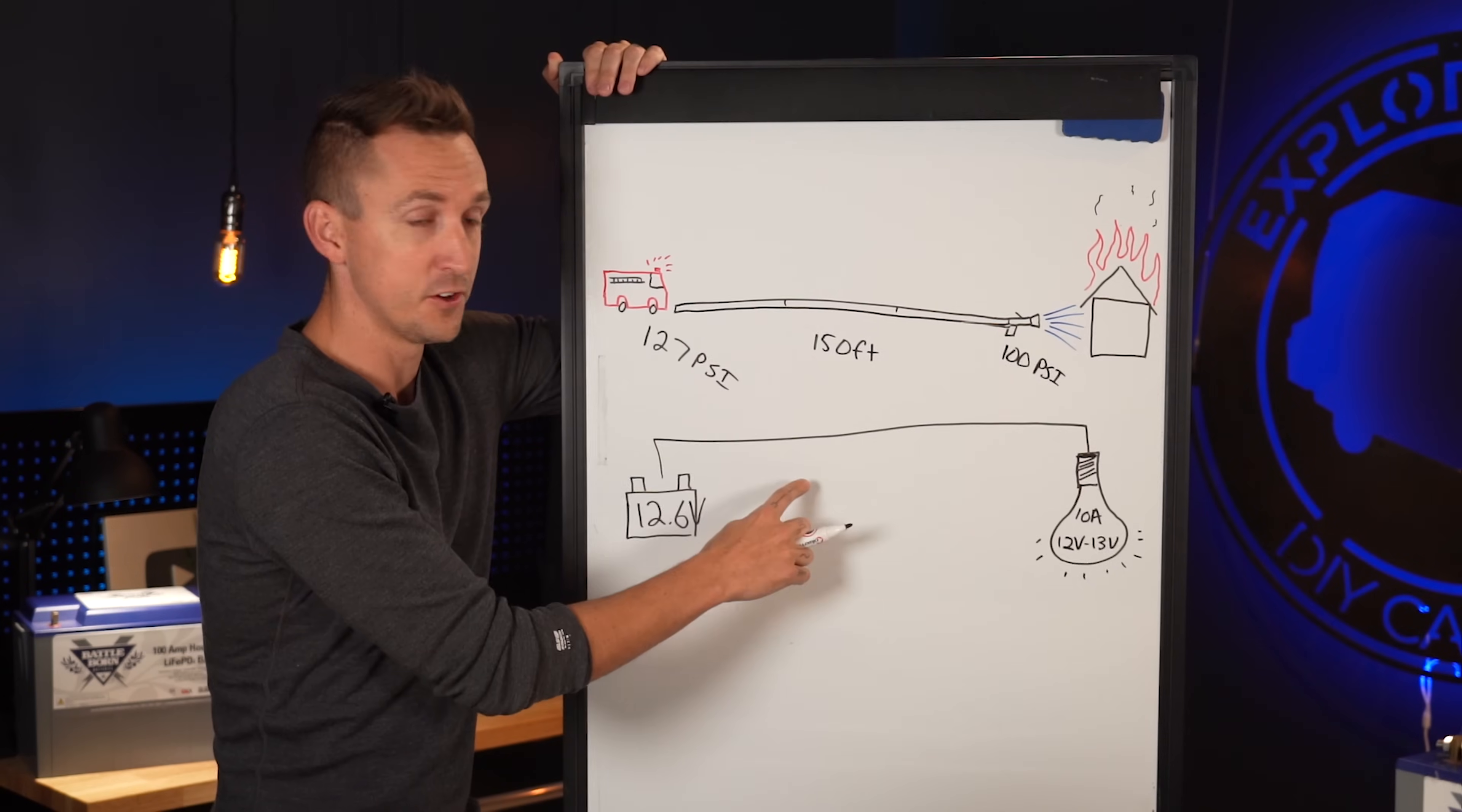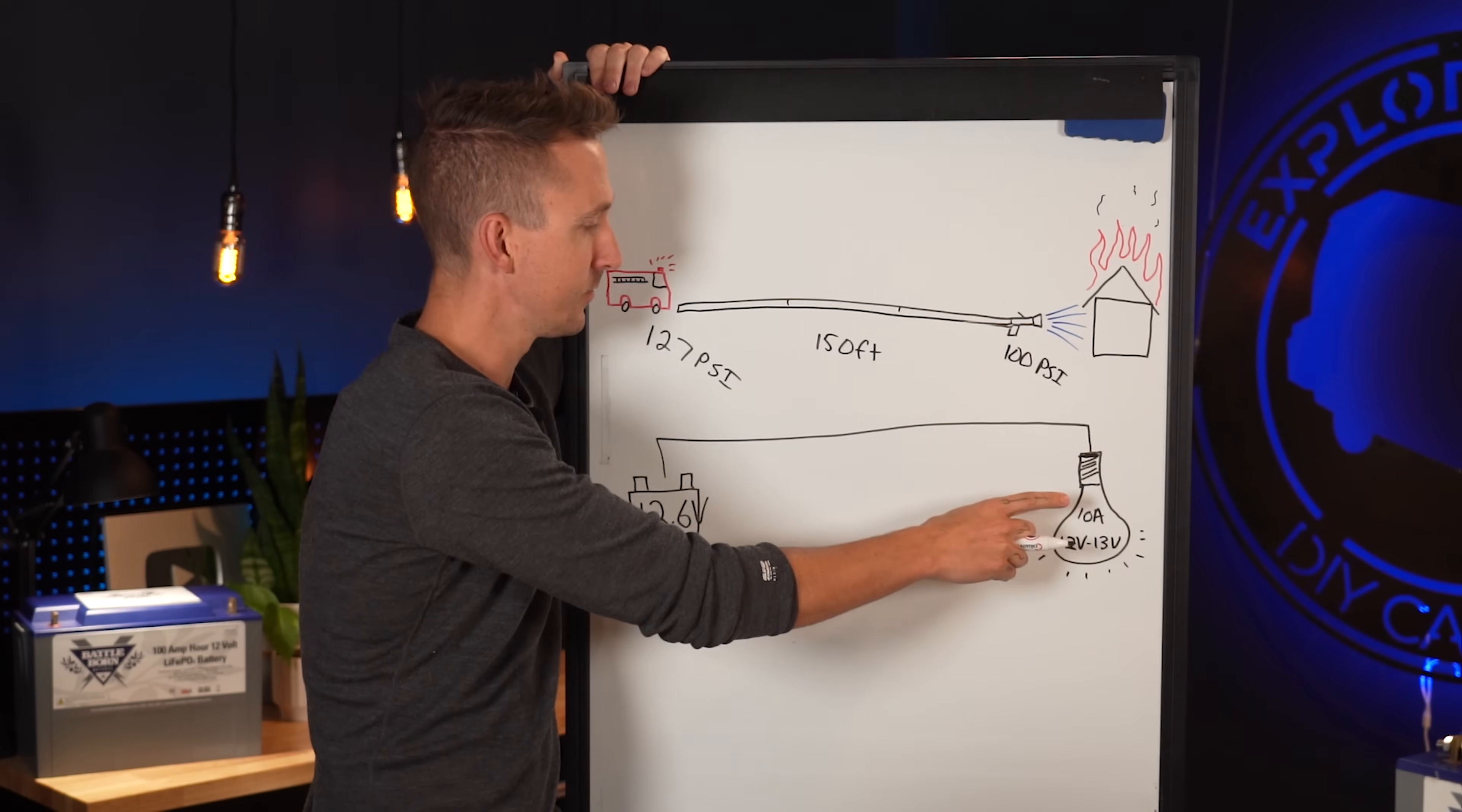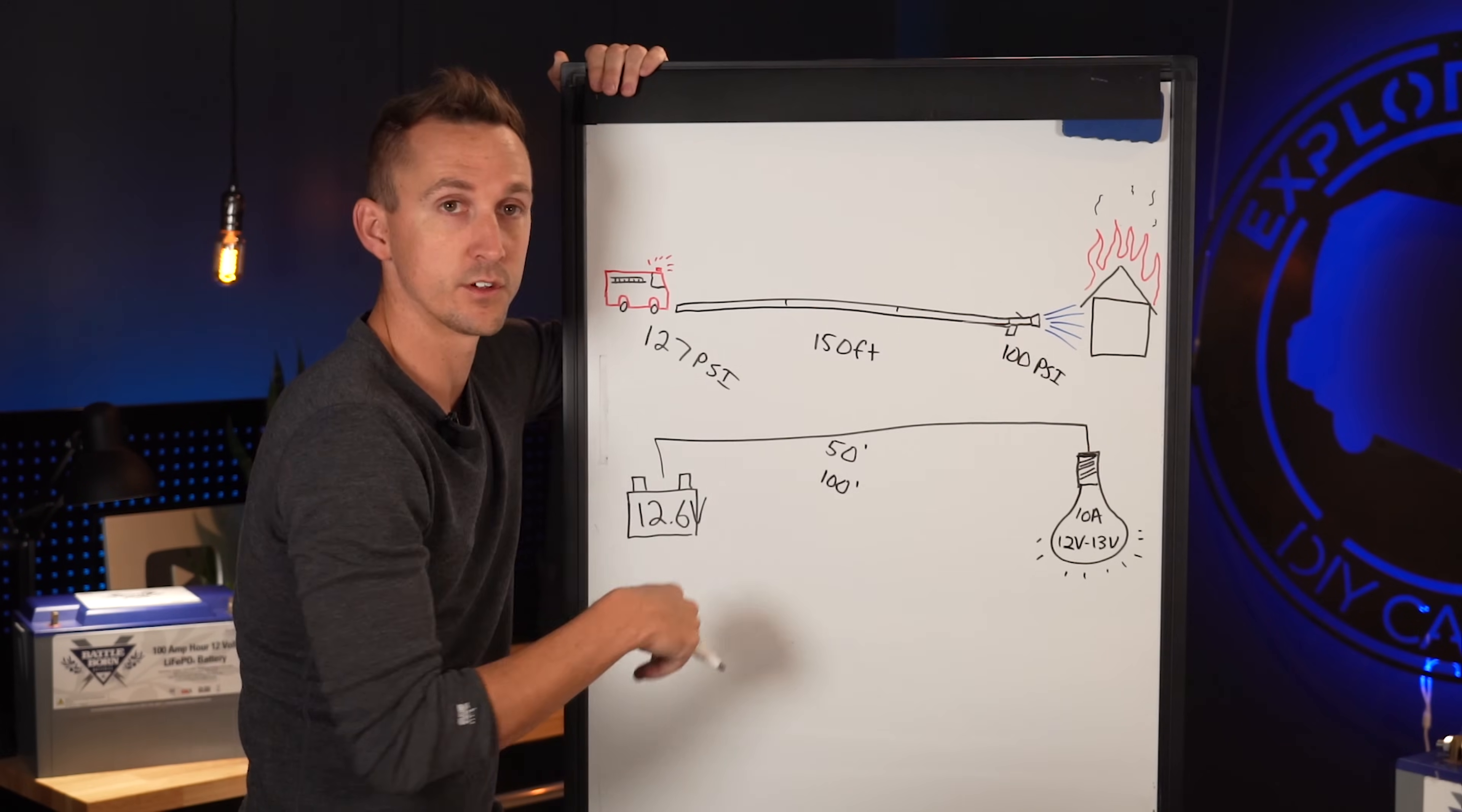Relating this to actual electricity, we have a 10 amp light bulb that needs to operate in a range of 12 volts to 13 volts just for this example. We also have a battery that is operating at 12.6 volts that's supplying power to the light. We're going to say that this distance is 50 feet from the battery to the light bulb, which means that there's 100 feet of actual wire. So 50 feet of positive wire and then 50 feet of negative coming all the way back.